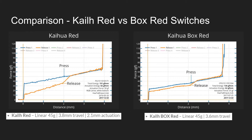Someone might think, oh they're both 45 gram switches with slightly different travel, they're about the same, right? Extremely not. Looking at bottom out: the Kale Red bottoms out at around 65 grams, while the Kale Box Red bottoms out around 50 grams — significantly different. One interesting thing to note is that the Kale Red graph looks much more jagged compared to the Box Reds. A more jagged line usually means the switch is less smooth, as there are variations in force as you press down, indicating inconsistencies as the switch moves. So that's something to keep in mind when you're wondering what the smoothest switch you could get is.